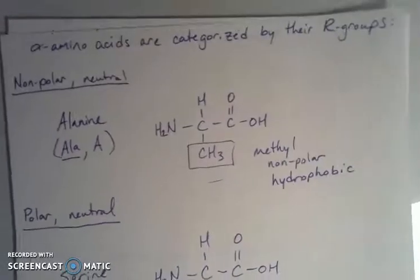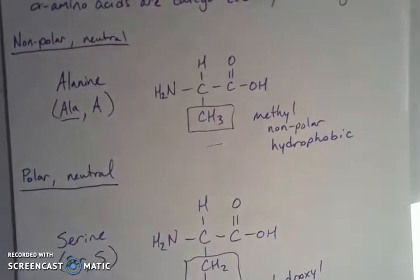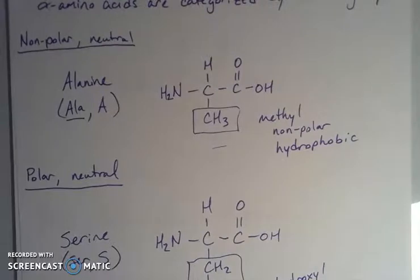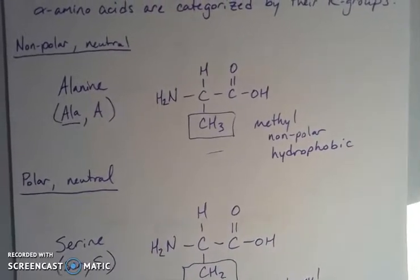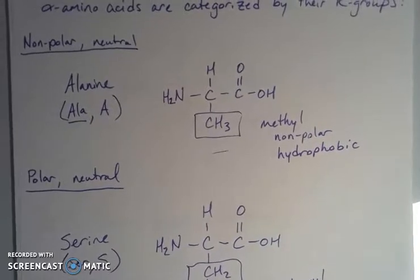When we get into the acidic and basic ones, we get a little bit of weirdness. So that's where we're going next. So far so good. We have nonpolar, neutral, polar, neutral. Talking about where these things like to exist in a pH range that is in the 6 to 8 range. That's what we classify as neutral in terms of pH.